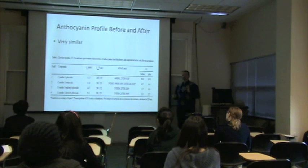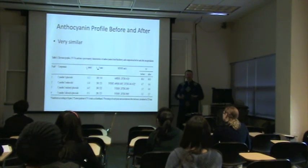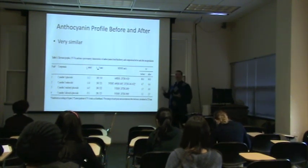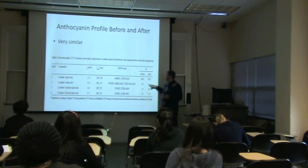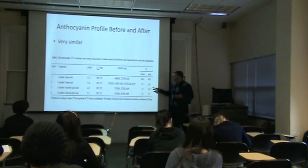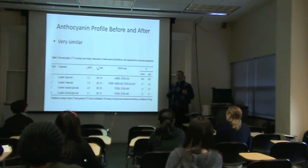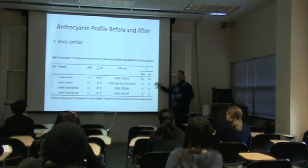We wanted to look at whether the encapsulation process itself modified the anthocyanins in any way. So we compared the original blackberry anthocyanin profile to the encapsulated profile using HPLC chromatographic analysis. As you can see in the before and after percentages, they differ slightly — the cyanidin-3-glucoside amount went up a little bit, while the cyanidin glucosides with organic acids attached decreased. This suggests some of those organic acids were lost, effectively converting those compounds to cyanidin-3-glucoside. Overall, though, not a big difference in the profile.